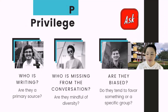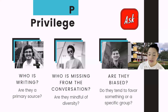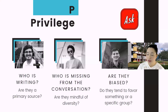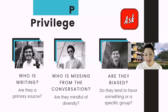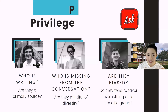P stands for Privilege. Who is writing? Are they a primary source — were they there, did they witness the events? Who is missing from the conversation? Are they mindful of including everyone? If it's a report, who were the participants? Do they tend to favor someone or a specific group over others? For instance, when I mentioned .edu is the most reliable, I should acknowledge I'm an educator at MDC, so I'm going to be slightly biased toward .edu. So consider the bias of everyone giving you information.